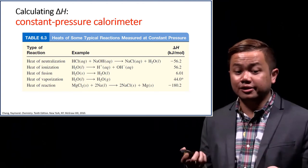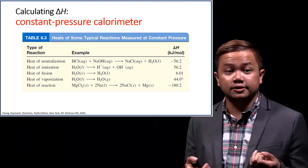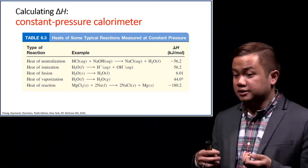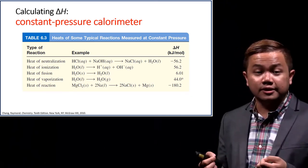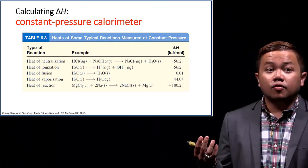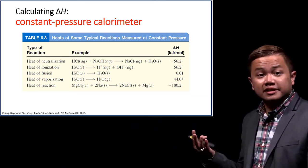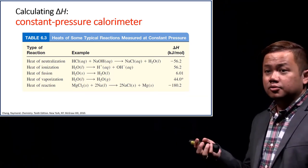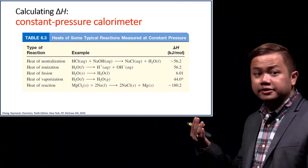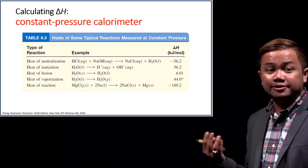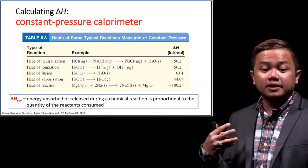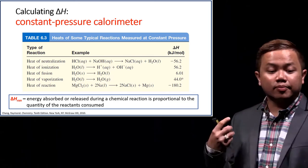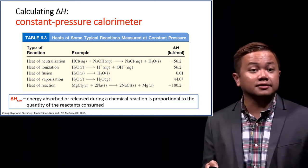Constant pressure calorimeters help us measure various heats of reactions such as neutralization reactions, ionization reactions, or changes in physical state such as heat of fusion, heat of vaporization, or heat of reaction. This table shows which physical and chemical processes can be measured with coffee cup calorimeters. The units for delta H are kilojoules per mole, meaning the energy absorbed or released is proportional to the quantity of reactants consumed.